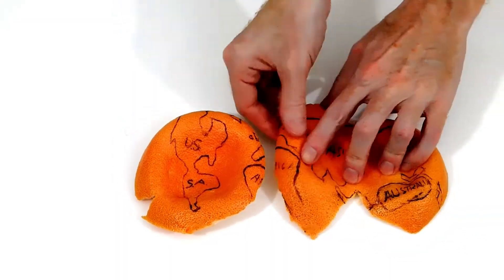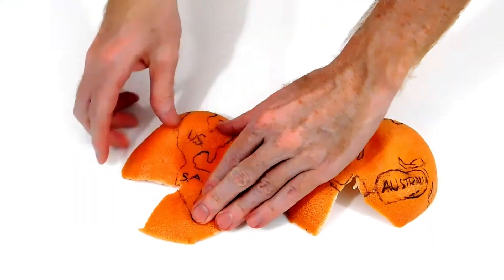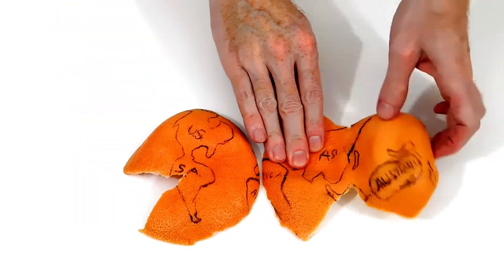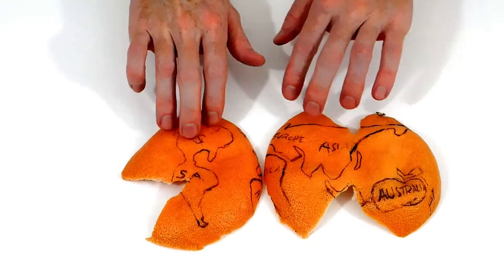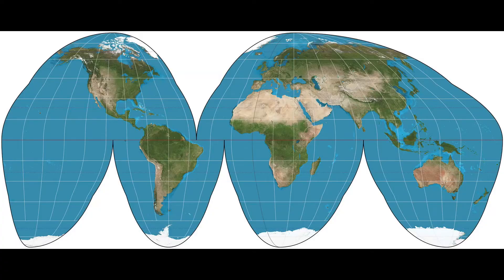Likewise, when map makers try to draw the countries and oceans of the world on a flat surface, they cannot do it unless they make cuts or stretch some parts. Here's one type of map that has cuts.